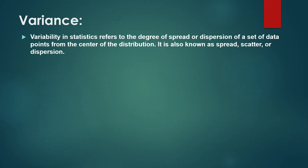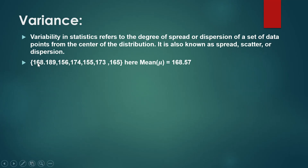The direct meaning of dispersion is the spread of data. If there are data points, we will talk about spread of data. For example, there are heights like 168, 189, and various heights. So if we talk about mean, we will talk about 168.57. If we add the number of data points, we get the mean — that is the average.